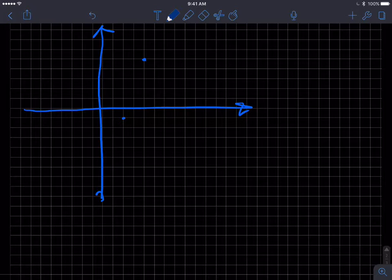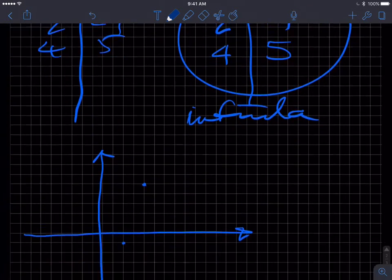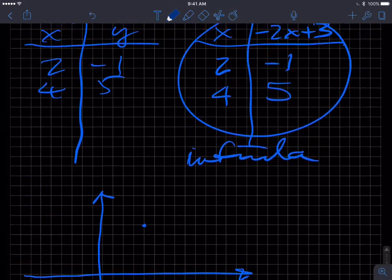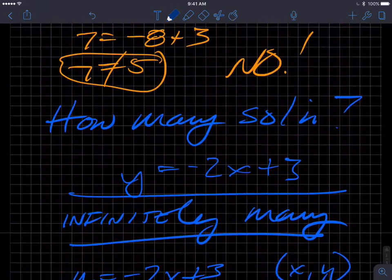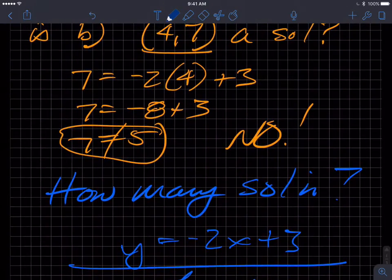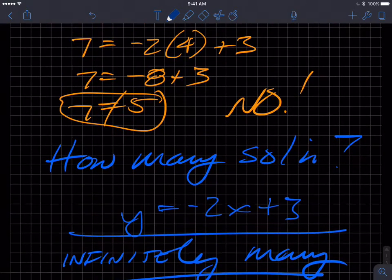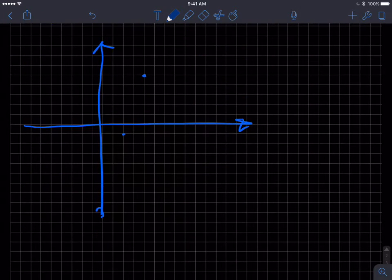That doesn't make sense at all. Why am I getting 4 comma 5? Oh, it's 4 comma negative 5. Oops, error. That should be a negative 5. And so this should be a negative 5, and so that makes more sense.